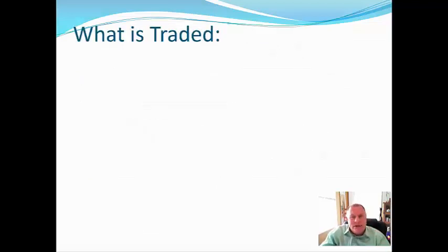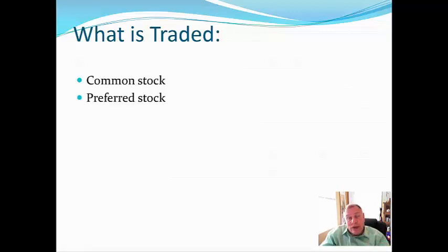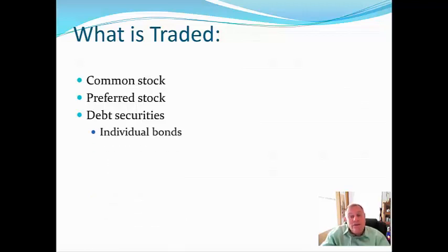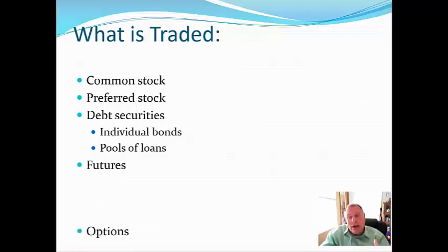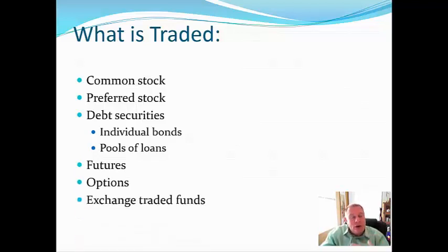What is traded? Common stock is ownership in the company. Preferred stock is still equity but has certain characteristics of debt. There are also debt securities — bonds that companies issue publicly. Many financial companies pool loans together and issue securitized transactions, popular in auto finance. Then there are futures, options, and exchange-traded funds. We'll look at all of these, but I want to give you a sense of what is traded, what a market is, and the difference between primary and secondary offerings.